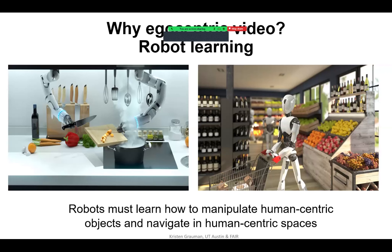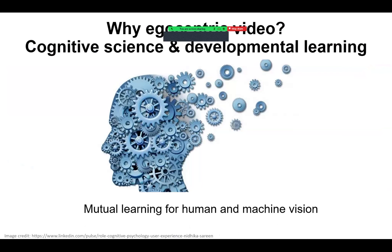Third and finally, there's tremendous intrigue in looking at cognitive science, developmental learning, and aspects of the origins of perception and visual learning in a developmental sense against what we can capture in this kind of egocentric view.